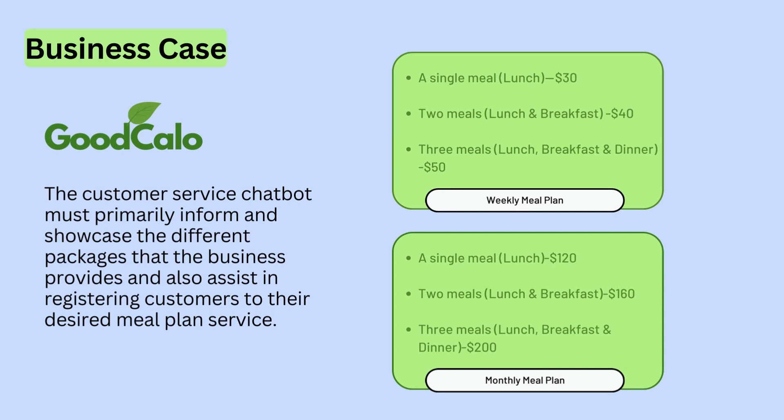You can see that there are two types of meal plan services that GoodCalo provides to users: either a weekly meal plan of one, two, or three meals, or a monthly meal plan of one, two, or three meals, with their respective prices. Also assists in registering customers to their desired meal plan service.